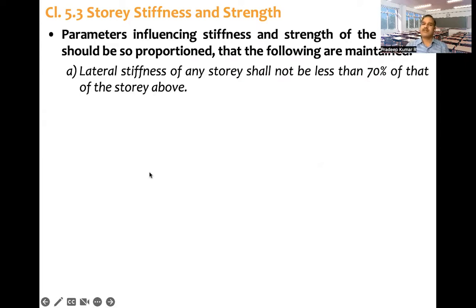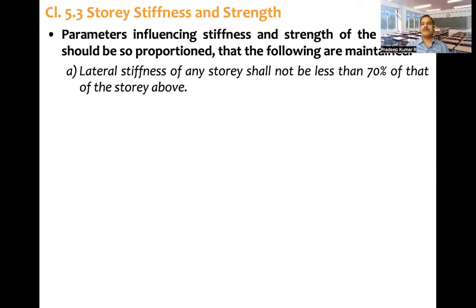The first condition: lateral stiffness of any story shall not be less than 70% of that of the story above. That means any story under consideration, its stiffness should not be less than 70% of the stiffness of the one floor above.